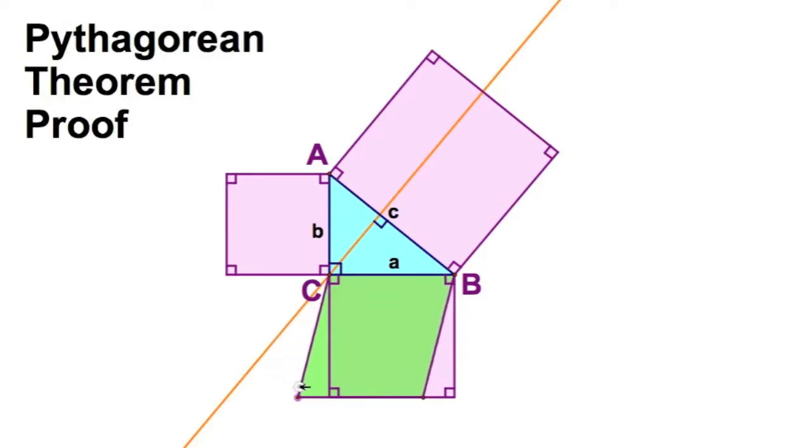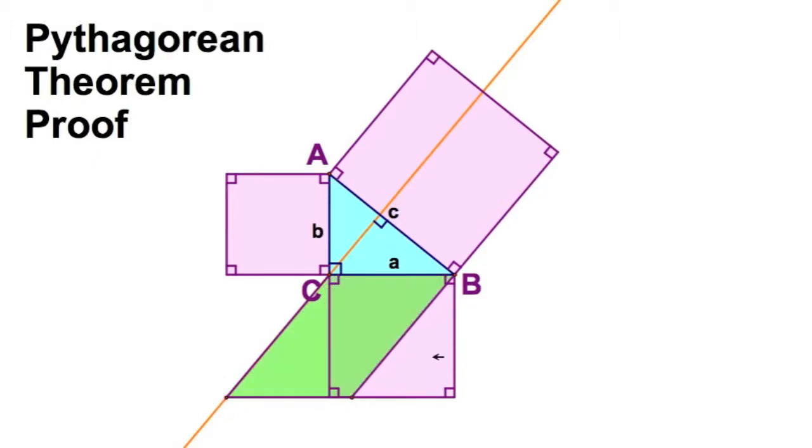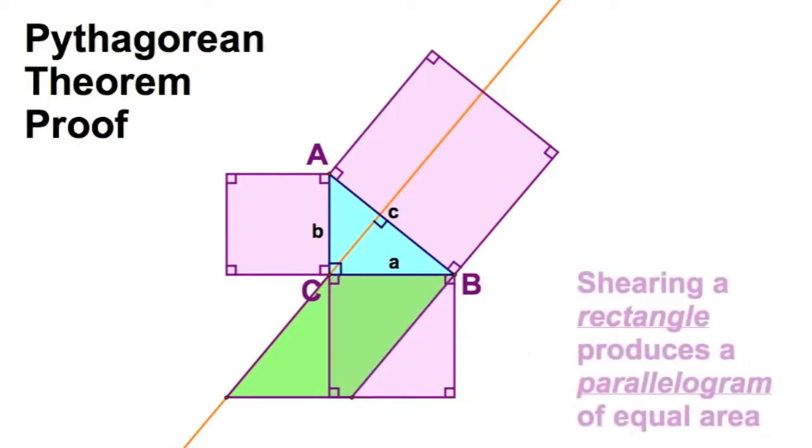Now when I shear this, it still has a base of A and it still has a height of A. The height is of course the perpendicular distance between the bases. So when I move it to here, this parallelogram has the same area as this square. Because this is a property of shearing.